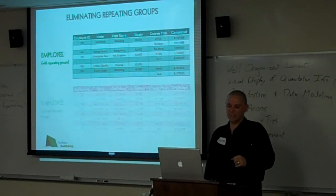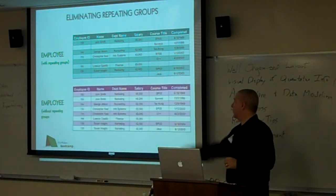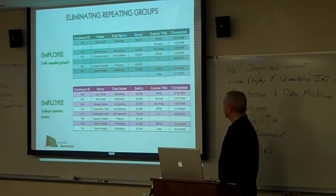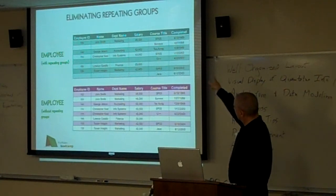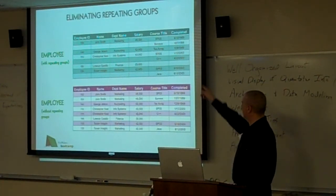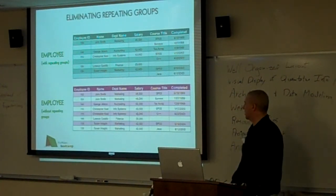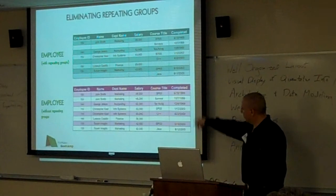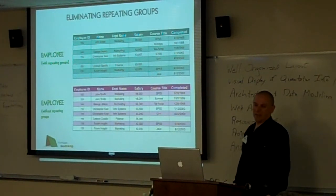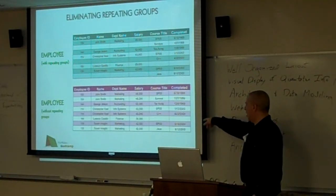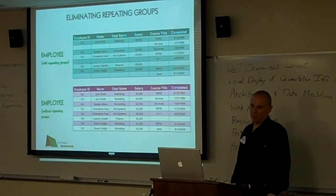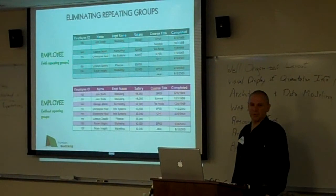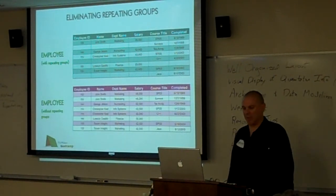This is an example of data with and without repeating groups. In the chart at the top, you'll notice that for employee ID 100 there are two values for course title. In the bottom chart there are not. So the data on the bottom has had repeating groups removed. That's really all there is to first normal form — there's nothing magical about it.